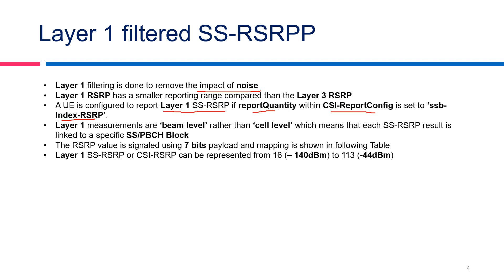Why is it set to SSB index RSRP? Because 5G has multiple SSBs which can be identified by an index. When the UE is doing SS-RSRP measurement at layer 1, it will be decoding one specific SSB beam, and that is why layer 1 measurements are known as beam-level measurements rather than cell-level measurements. This means the SS result is linked to a specific SS or PBCH block. The RSRP value for layer 1 or layer 3 can be represented by a 7-bit payload, and the mapping is discussed in further slides.